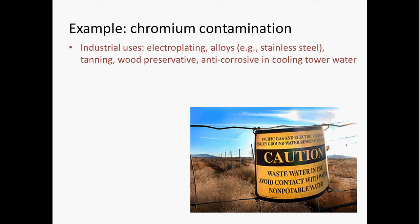Chromium is a metal that has a lot of industrial uses, including electroplating, making alloys, tanning, wood preservatives, and as an anti-corrosive agent in water. If it is in your water, that's bad news, because it can cause stomach and lung cancer, and possibly a few other adverse health effects.